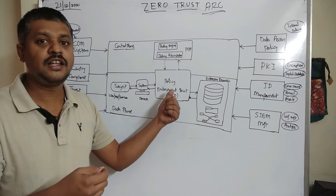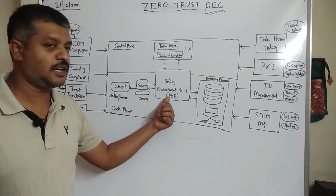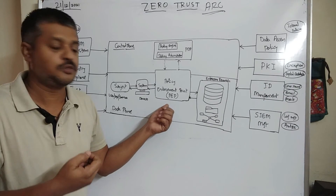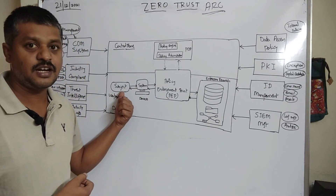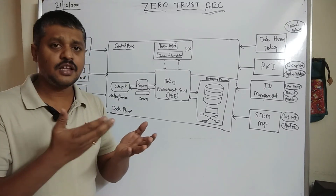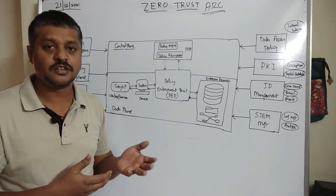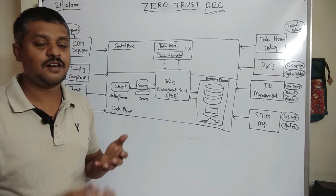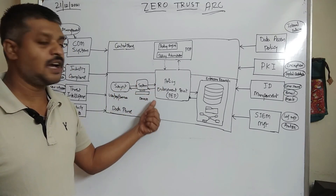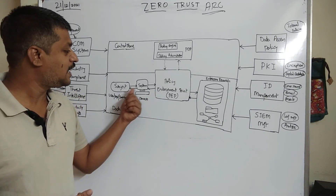To prove authenticity, the subject must authenticate. They can provide OTPs or some kind of multi-factor authentication. There are various authentication methods. If the subject's authenticity and session are properly authenticated, the connection proceeds.